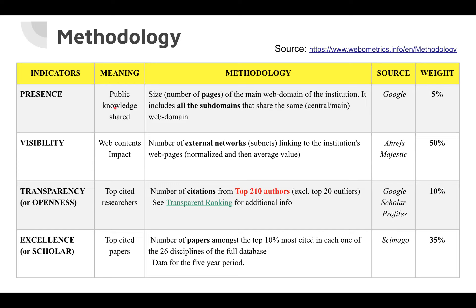The Presence indicator measures the university's total web footprint — all its websites and sub-domains. For example, the main www.pdn.ac.lk domain plus sub-domains like faculty of agriculture, engineering, medicine, and departmental sub-domains. Everything ending with pdn.ac.lk together constitutes presence. It's essentially the total number of web pages published across all these domains combined, and it accounts for 5% of the final ranking weight.